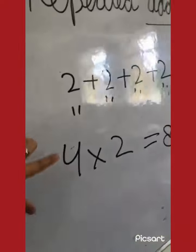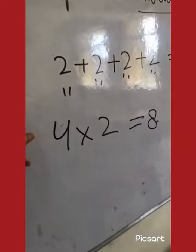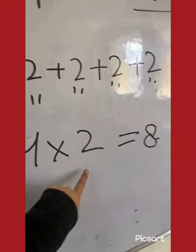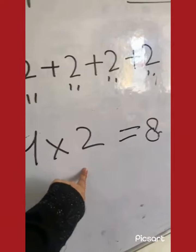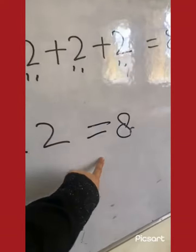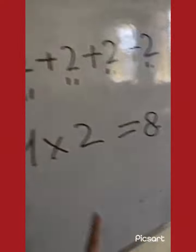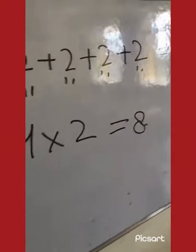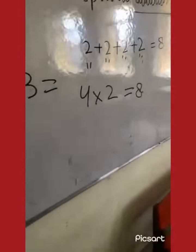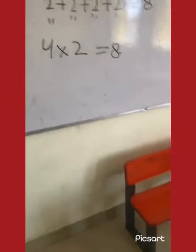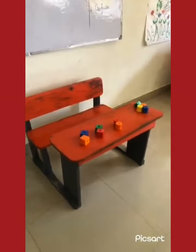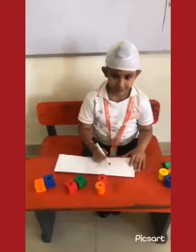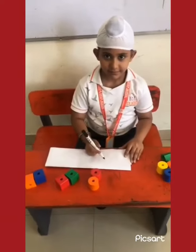How will we write this? How many groups do we have? 4. Multiplied by what number? 2. And what answer did we get? 4 into 2 is 8. So now let's get started with the activity.